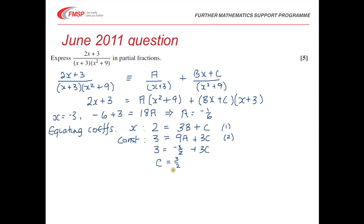Now we know the value of C, we can substitute that value back into our first equation, and we end up with 2 = 3B + C, which is 3/2, and if we work that out, then that turns out that B is going to be 1/6.